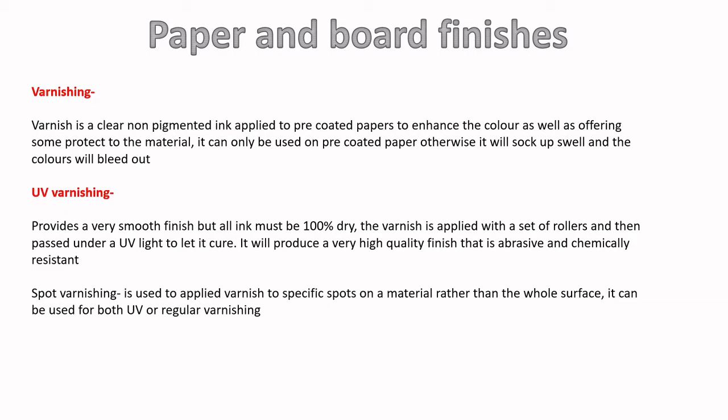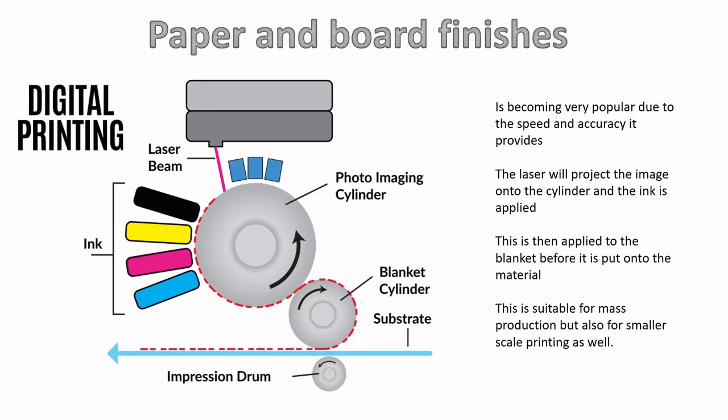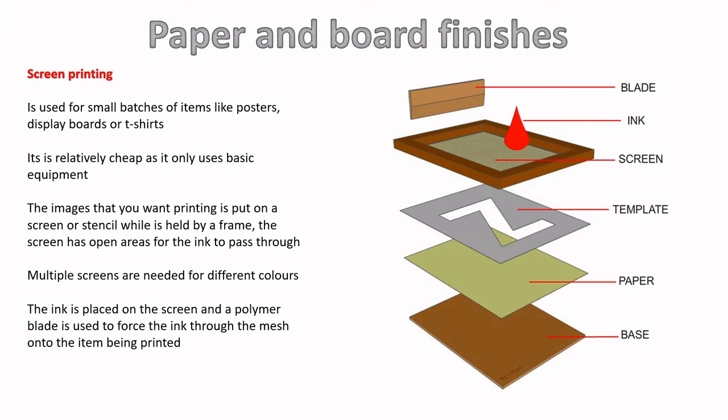With UV varnishing, the varnish is applied by rollers and only cures under UV light — 'cure' is the correct technical term meaning it will only dry or set when UV light interacts with it. It produces a very high-quality finish and is also abrasive and chemical resistant. Spot varnishing can be done with either standard or UV varnish, and rather than varnishing the entire surface, it targets just one particular area.